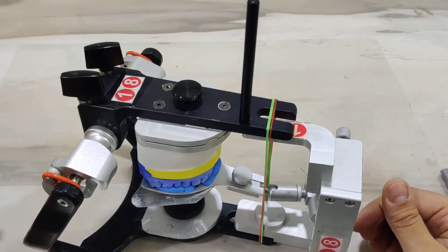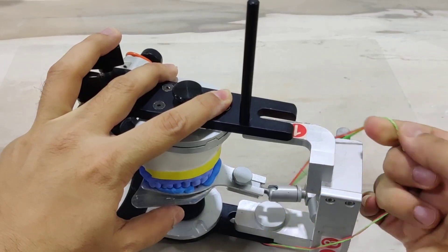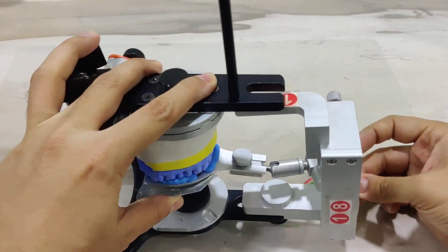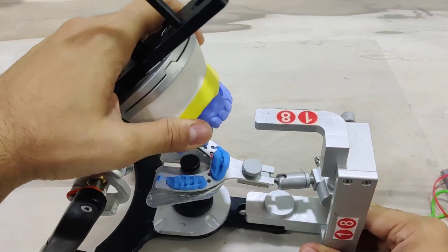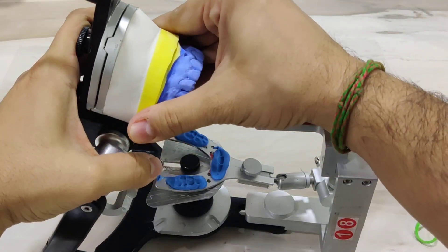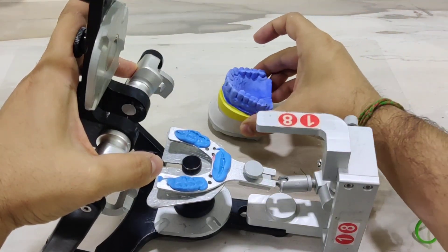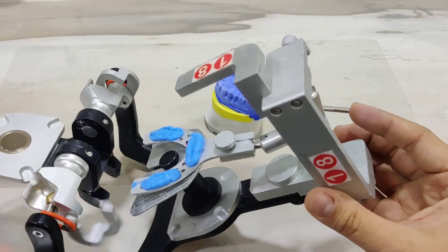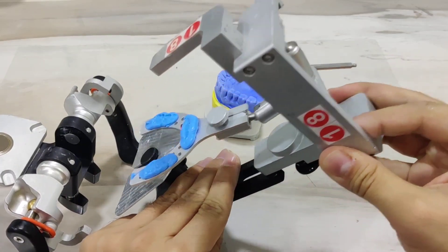The first thing we do is separate out these elastics. We no longer need them. Once the elastics are out, it is important that we lift the upper member of the frame and separate the maxillary cast out. The magnetic plate allows you to do this very conveniently. Keep this safely.